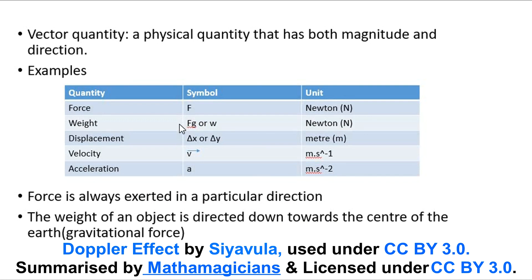Now, a vector quantity, on the other hand, it is a physical quantity again. But this time, it has both magnitude and direction. For examples, for the ones that I did not mention, force. Force is always exerted in a particular direction. The force of gravity, going down towards the ground or into the earth. And acceleration. Acceleration also has a direction.